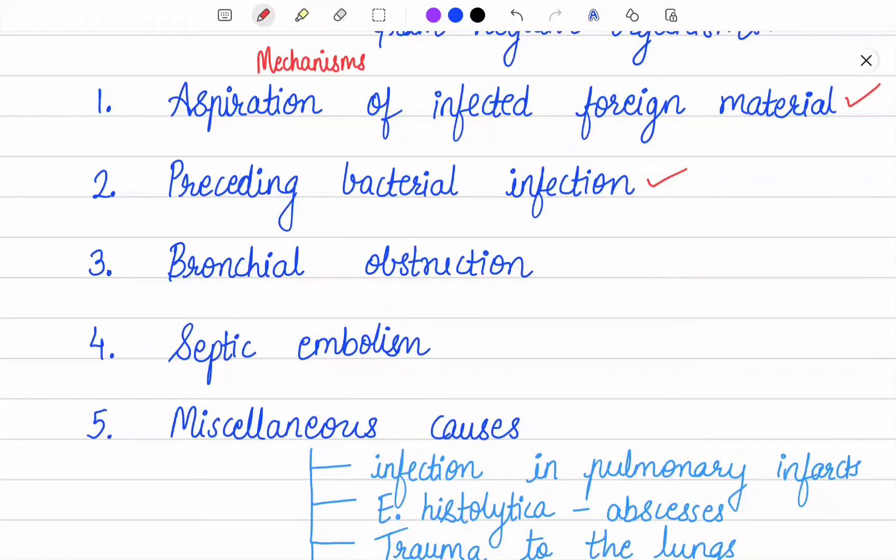Third is bronchial obstruction. An abscess may form distal to an obstructed bronchus, such as from a bronchial tumor or impacted foreign body.